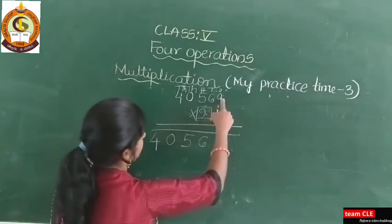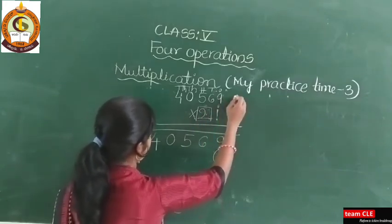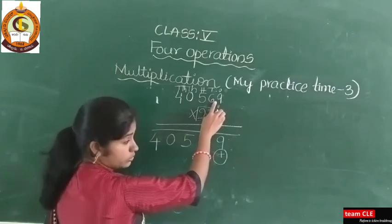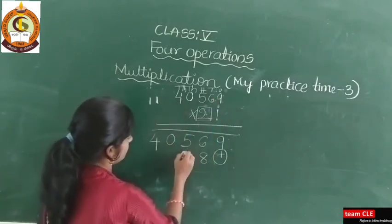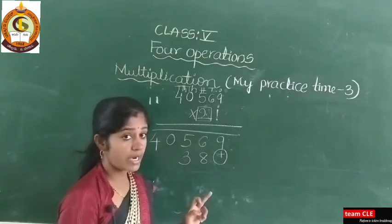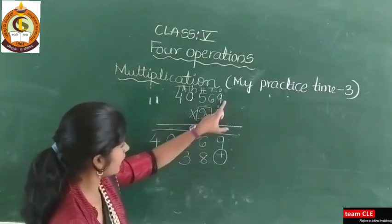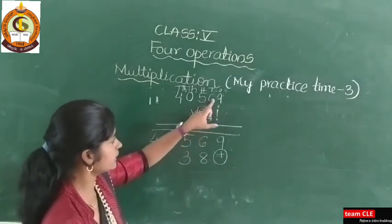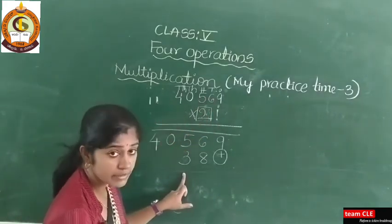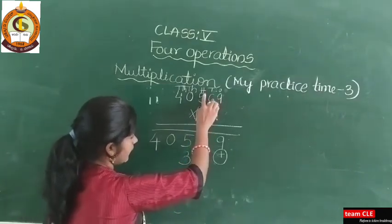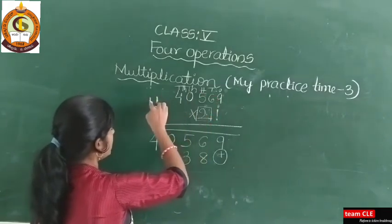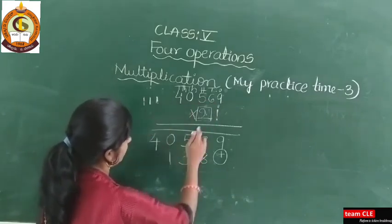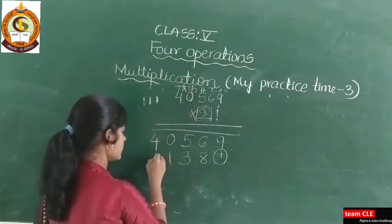Two nines are 18 — carry 1, write 8. Two sixes are 12, plus carry 1 is 13 — carry 1, write 3. Two fives are 10, plus carry 1 is 11 — carry 1, write 1. Two into zero is zero, plus carry 1 is 1. Two fours are 8. Don't forget to add the carry.